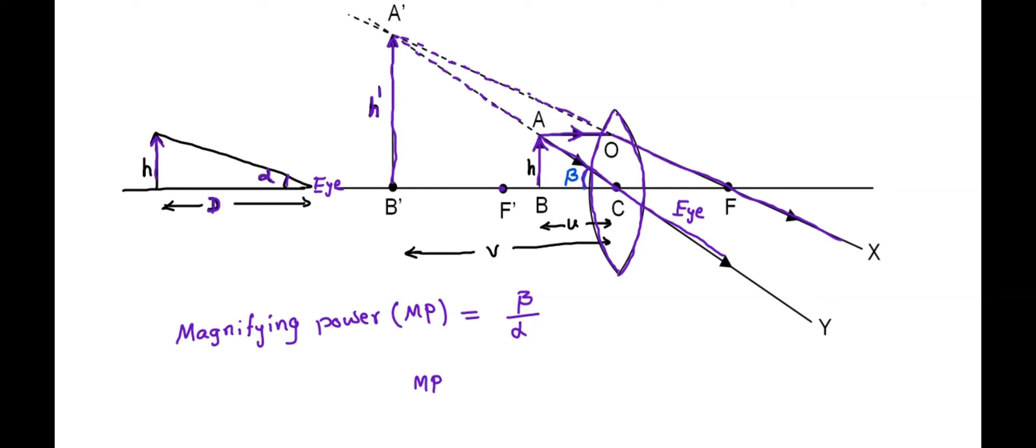From this, MP is equal to beta, which can be taken as tan beta. If beta is smaller, we can write h divided by minus u. From the triangle ACB, beta is equal to h by u. We are using sign convention, divided by alpha. From the first diagram, alpha is equal to tan alpha equals h divided by minus d. Here we are applying the sign convention again. That is equal to d by u. It is the general expression for magnifying power of simple microscope. Take this equation number 1.